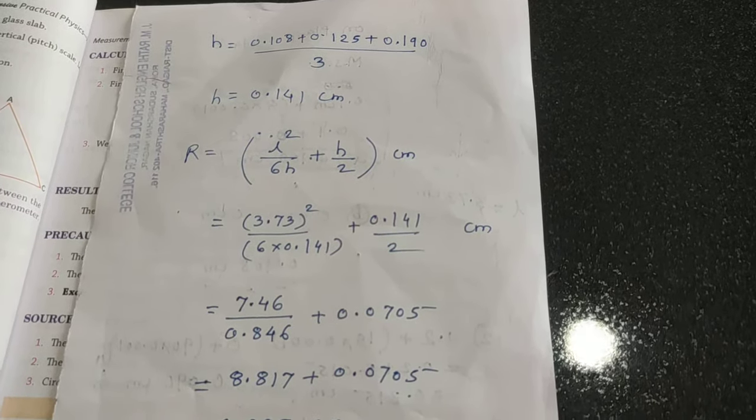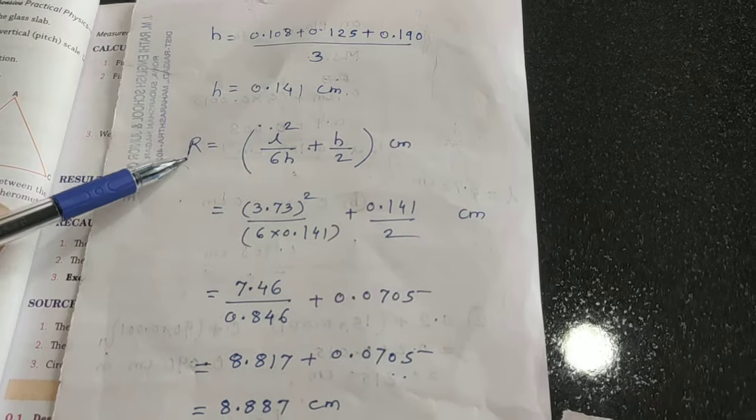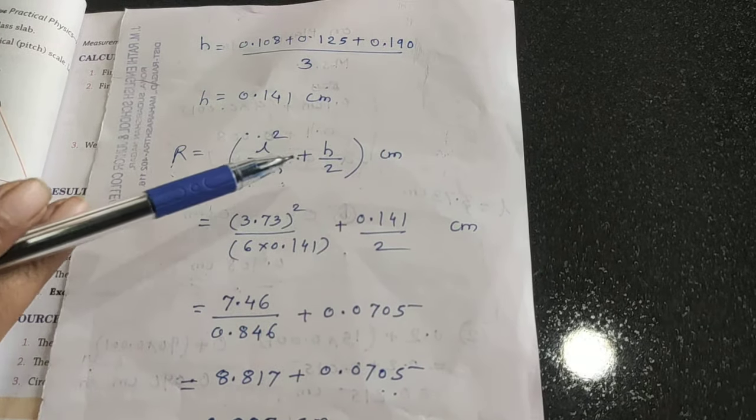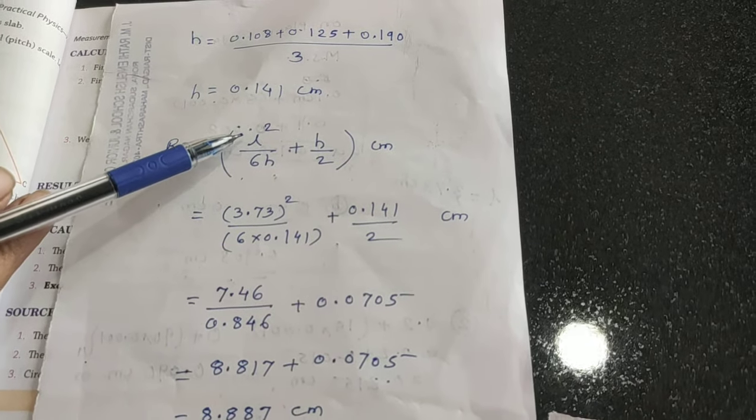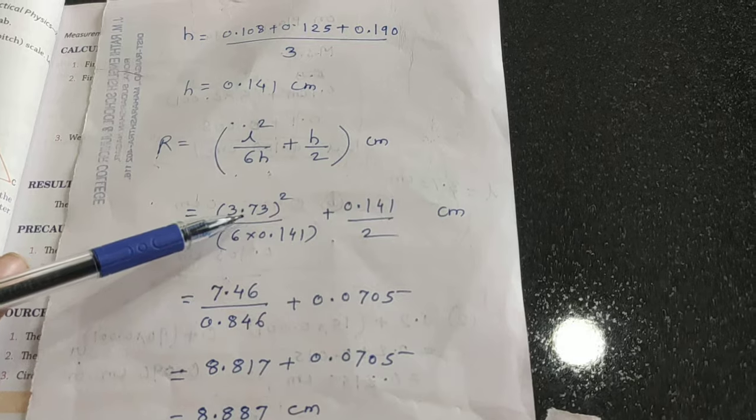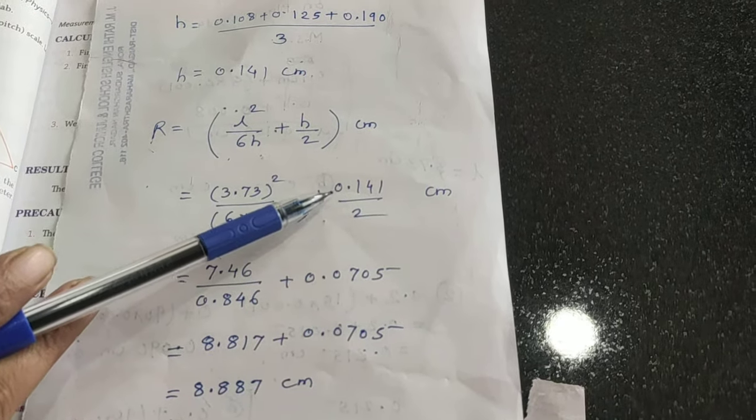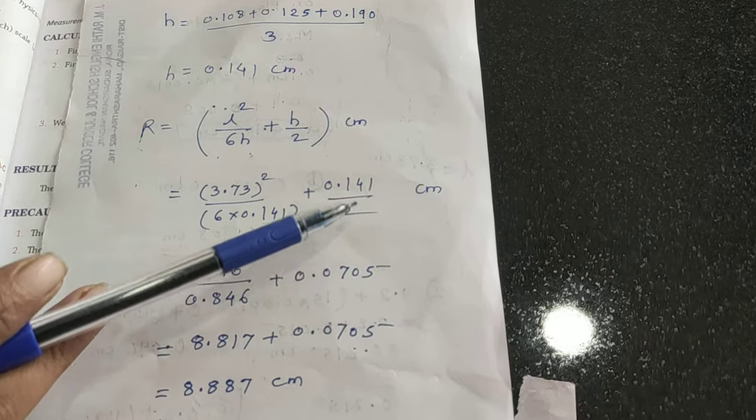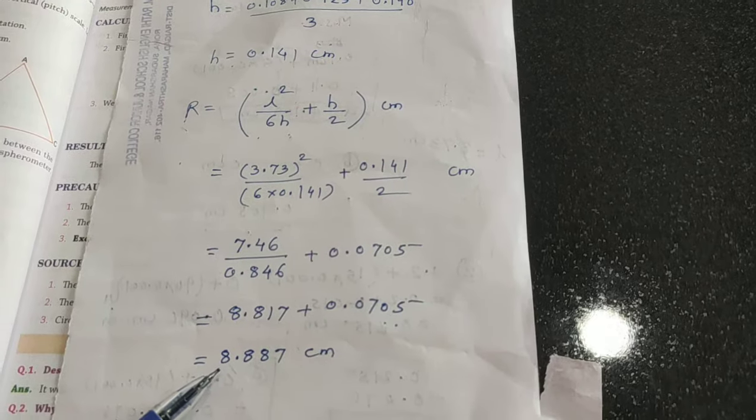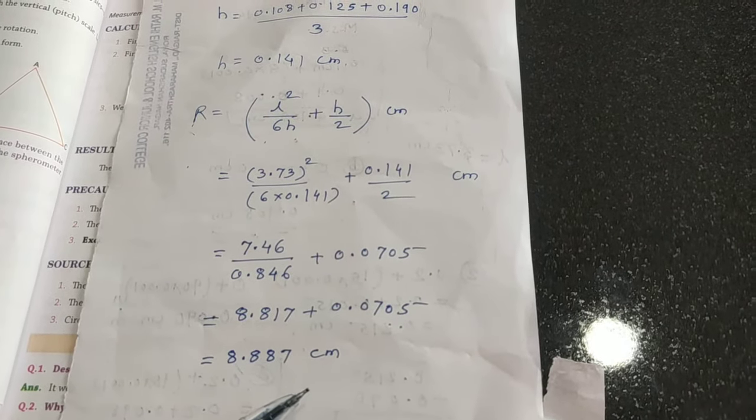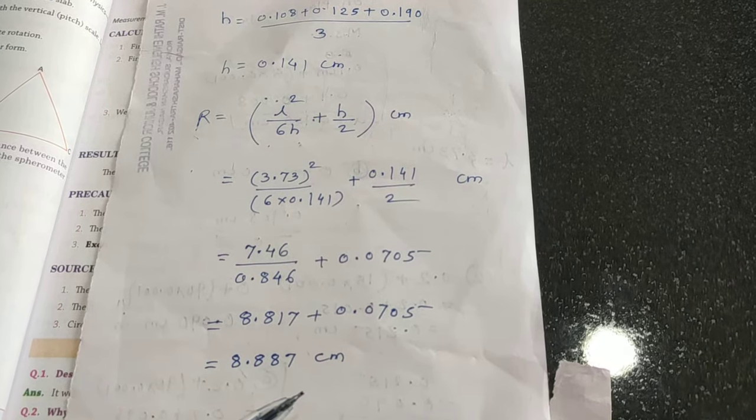Use the formula radius of curvature: l square upon 6h plus h by 2. Substitute the value of l, which is 3.73 cm, and the average height 0.141 cm. After calculation you will get the final answer 8.887 cm, which is the radius of curvature of the given convex lens.